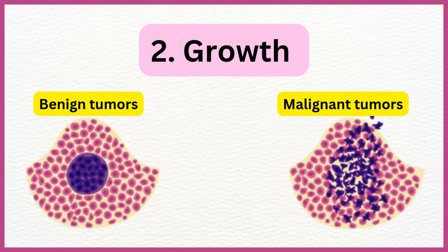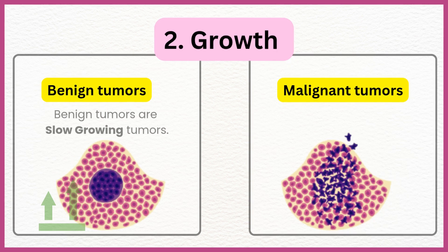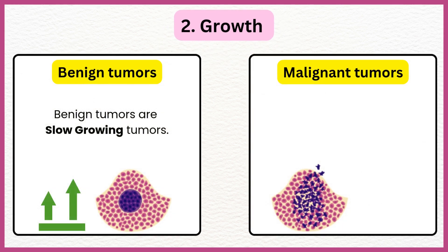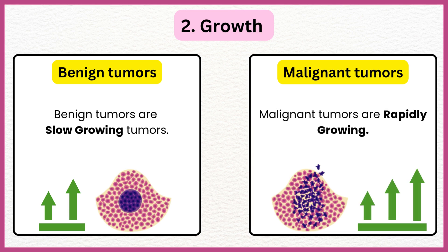Growth of Tumors: Benign tumors are slow-growing tumors, while malignant tumors are rapidly growing tumors.